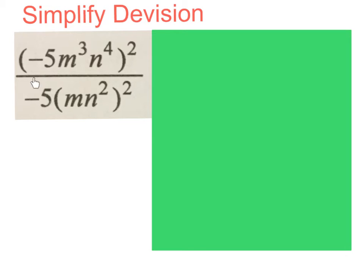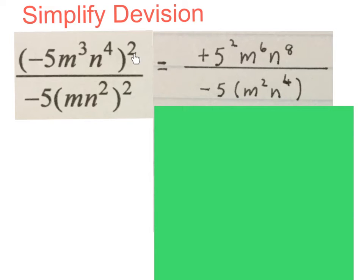This is our last division sum, and it is different from the previous ones. We must always simplify the top first, simplify the bottom fully, and then simplify them towards each other. First we use the exponent laws and multiply the exponent all the way to the front, then times the 2 into the bracket making the minus 5 wait. We square what's inside: minus times minus gives a plus, so 5 to the power of 2 is 5 squared. The exponent 3 times 2 gives m to the power of 6, and 4 times 2 gives n to the power of 8. Then we rewrite the minus 5 term: the 2 times the 1 gives m squared, and m squared times 2 gives m to the power of 4.